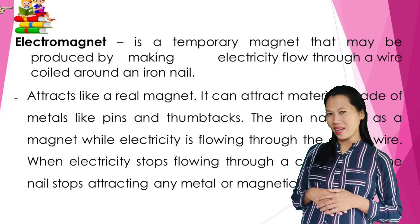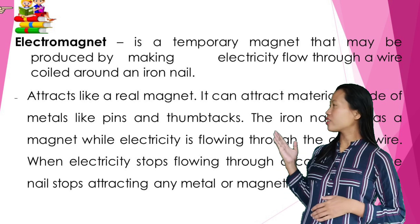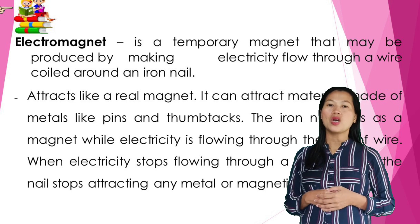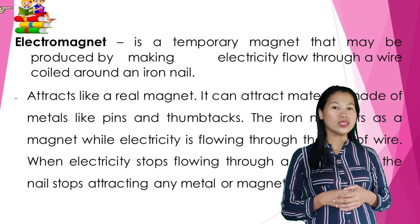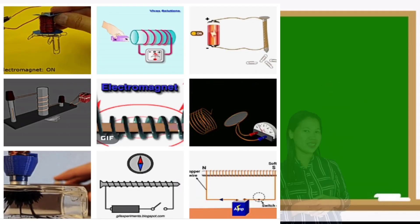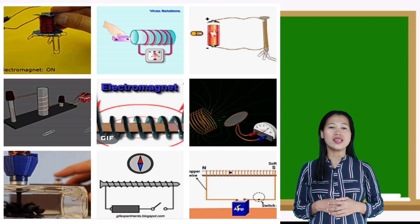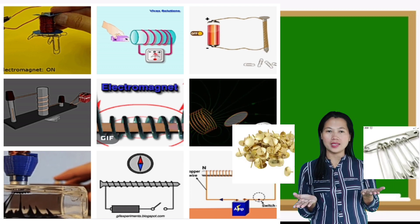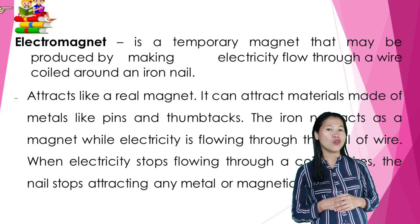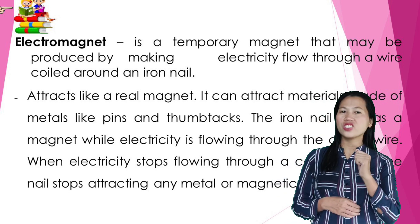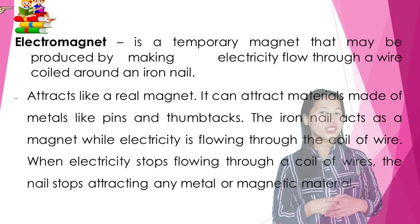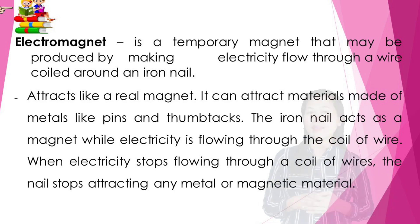What is an electromagnet? An electromagnet is a temporary magnet that may be produced by making electricity flow through a wire coiled around an iron nail. It attracts like a real magnet and can attract materials made of metals like pins. The iron nail acts as a magnet while electricity is flowing through the coil of wire. When electricity stops flowing through the coil of wire, the nail stops attracting any metal or magnetic material.